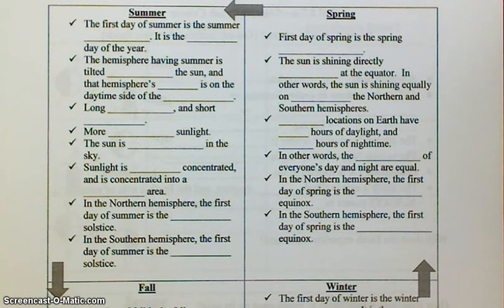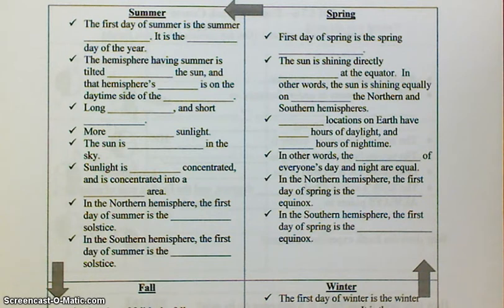You have more direct sunlight. The sun is highest in the sky during the summer. Sunlight is more concentrated and is concentrated into a smaller area. Remember, all of these statements have to do with summertime. In the northern hemisphere, the first day of summer is the June solstice. In the southern hemisphere, the first day of summer is the December solstice.